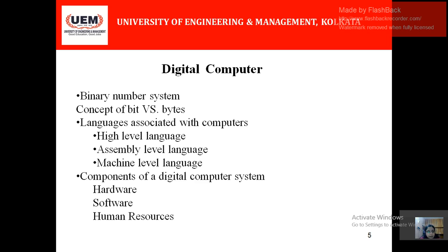The languages used by computers are mainly of three types: high-level language, assembly language, and machine-level language. High-level language is basically used by application-level software — whatever the user does, like writing a letter or doing calculations, is written in high-level language. But the computer does not understand this language, so some platform is needed to convert the high-level language to the machine-understandable low-level language, and that is done by the compiler.